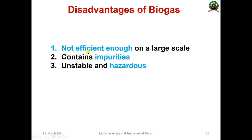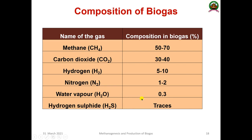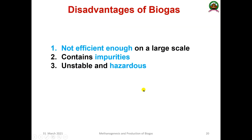Disadvantages of biogas: it is not efficient enough on a large scale — scaling up is very difficult as a large amount of waste material is required. It contains certain impurities as seen in its composition. It can be unstable and hazardous, particularly due to the presence of hydrogen sulfide.